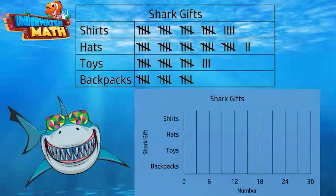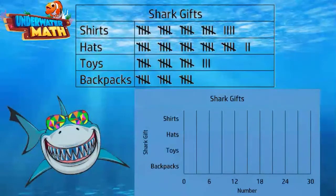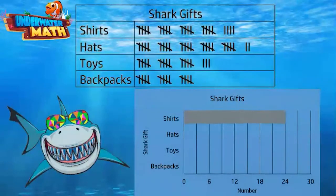We can count the whole bundles by five: 5, 10, 15, 20. When we get to the partial bundle, we just count the individual tallies: 21, 22, 23, 24. So 24 shark shirts were sold, and on the bar graph we will draw a bar that goes to the 24 line.